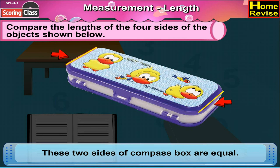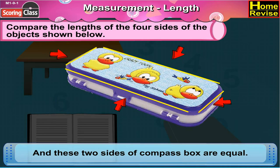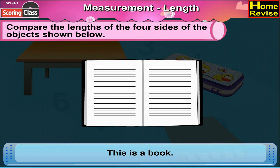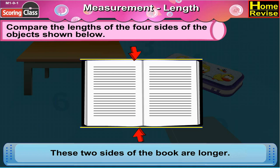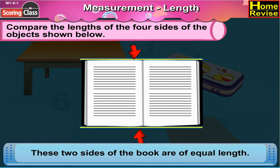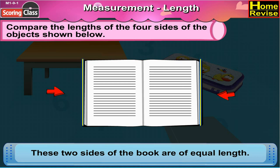These two sides of the compass box are equal and these two sides of the compass box are equal. This is a book. These two sides of the book are longer, these two sides of the book are of equal length, and these two sides of the book are of equal length.